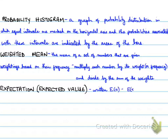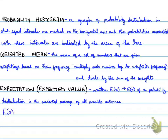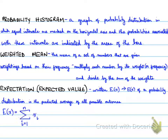An expectation or expected value is written as E(x). E(x) of a probability distribution is the predicted average of all possible outcomes. E(x) is a sum — the sum from 1 to n of x_i times P(x). We take the sum of all the values of x times P(x) from the probability distribution table that we calculate.